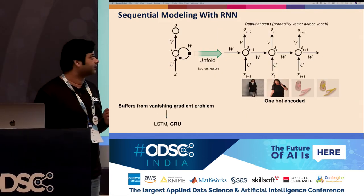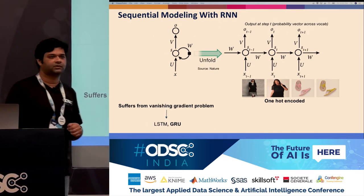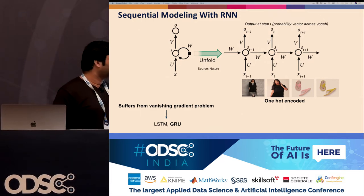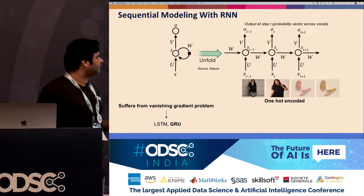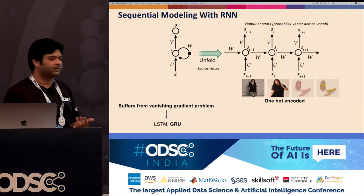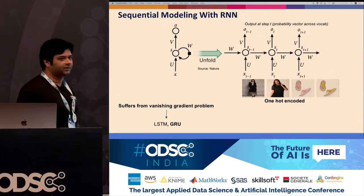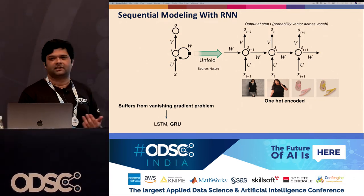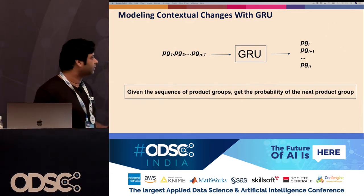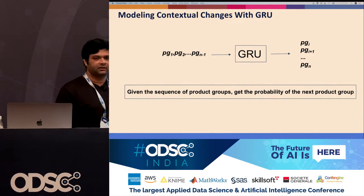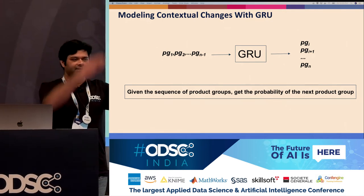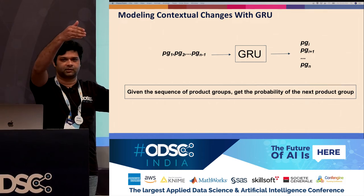A more modern approach is to use an RNN, which is probably most frequently used now — similarly trying to capture sequential modeling where given a bunch of items we predict the next item. Products are one-hot encoded, and sequences of product groups are passed through the RNN. We have millions of samples to train with. Since RNNs suffer from vanishing gradients, we used GRU. We have a bunch of sequences of product groups, feed them to the GRU, and predict the next set of product groups the user might look at. We evaluate by cutting the session at a point and predicting the next products.